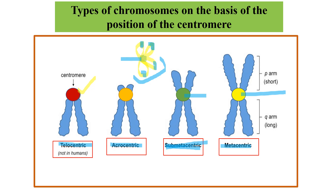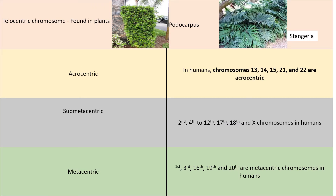Telocentric chromosomes are generally not found in humans; they are found in plants. Two examples are Podocarpus and Stingeria — these are plants that have telocentric chromosomes in their genetic material.